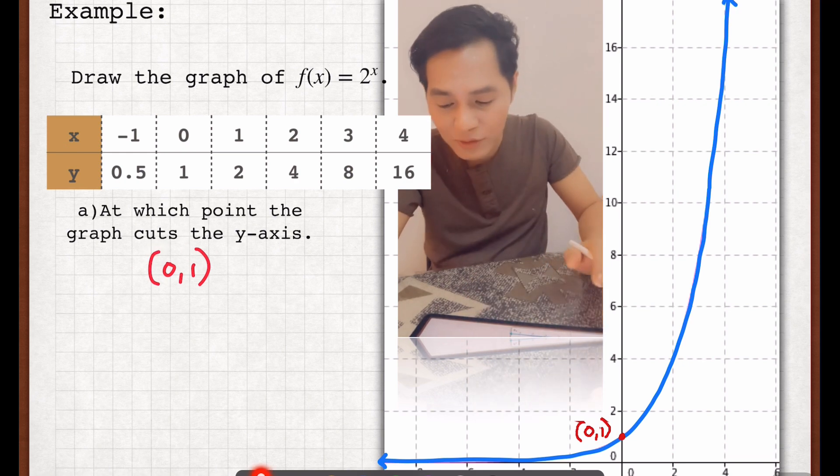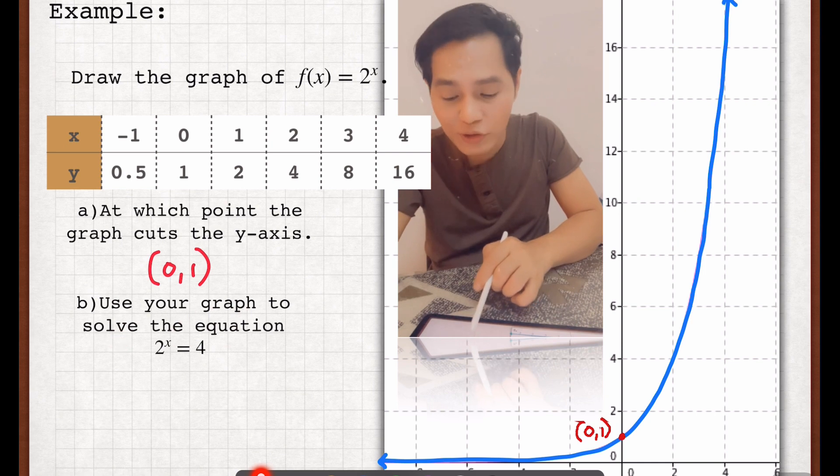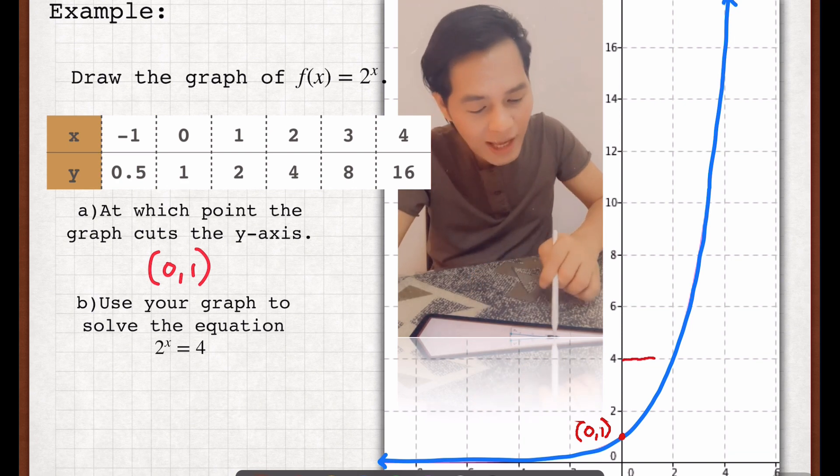Next question is: use your graph to solve the equation 2^x = 4. So how do we do this? Just simply look at the graph and check out 4 on the y-axis.